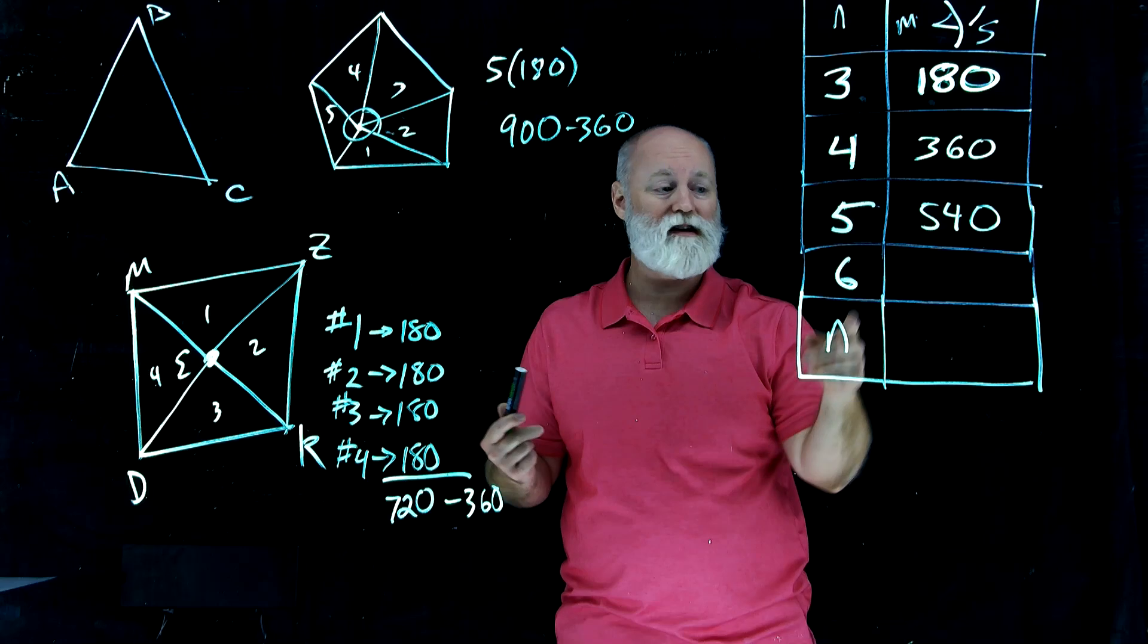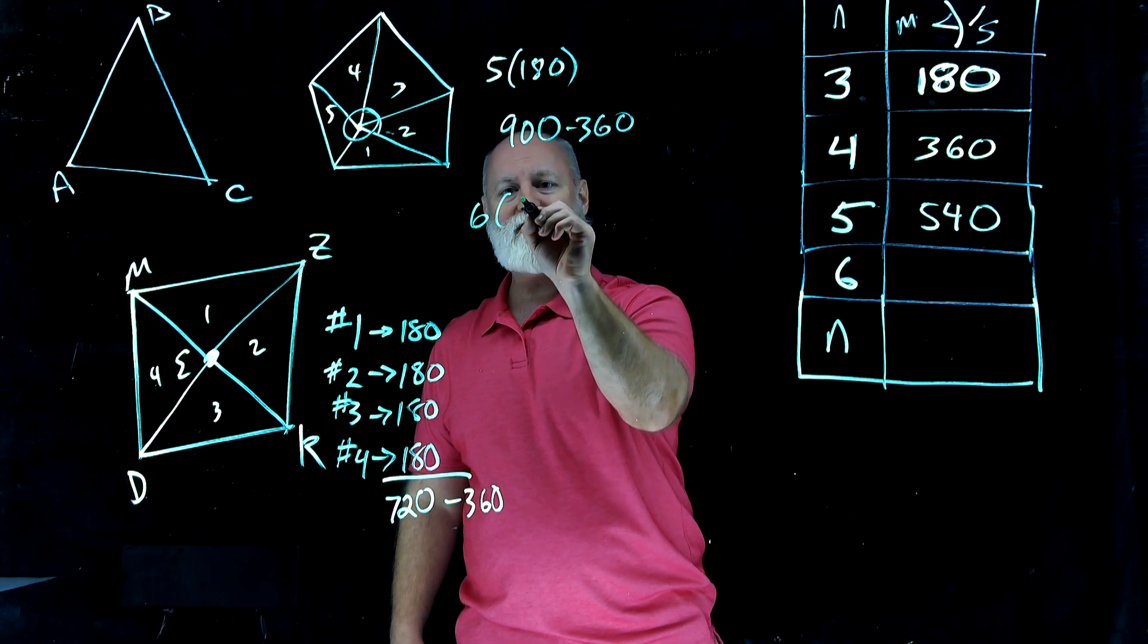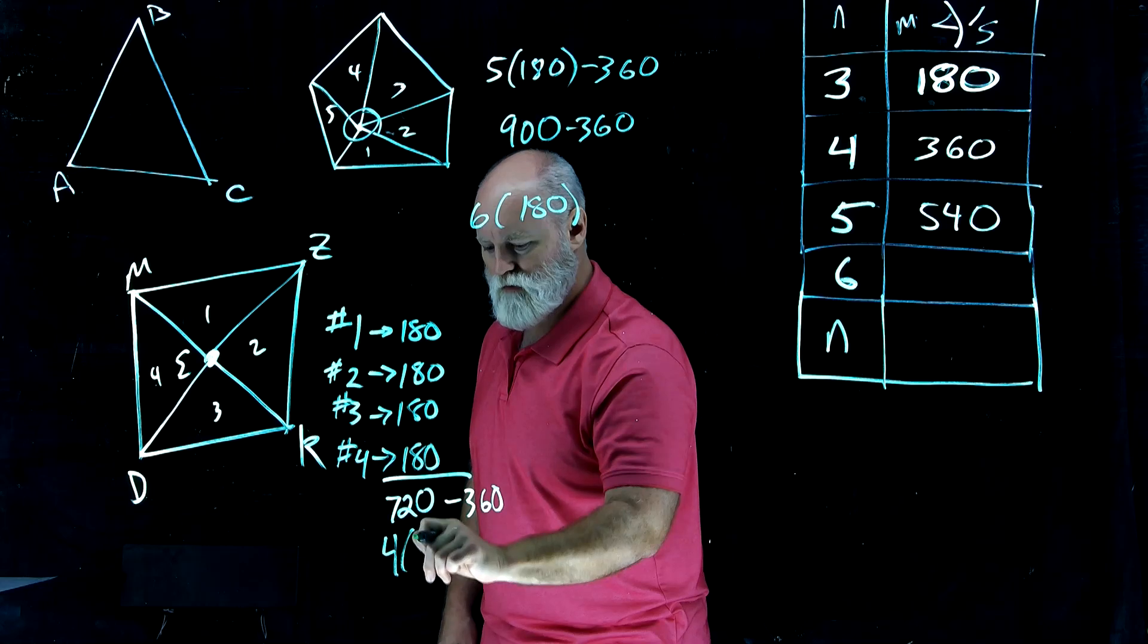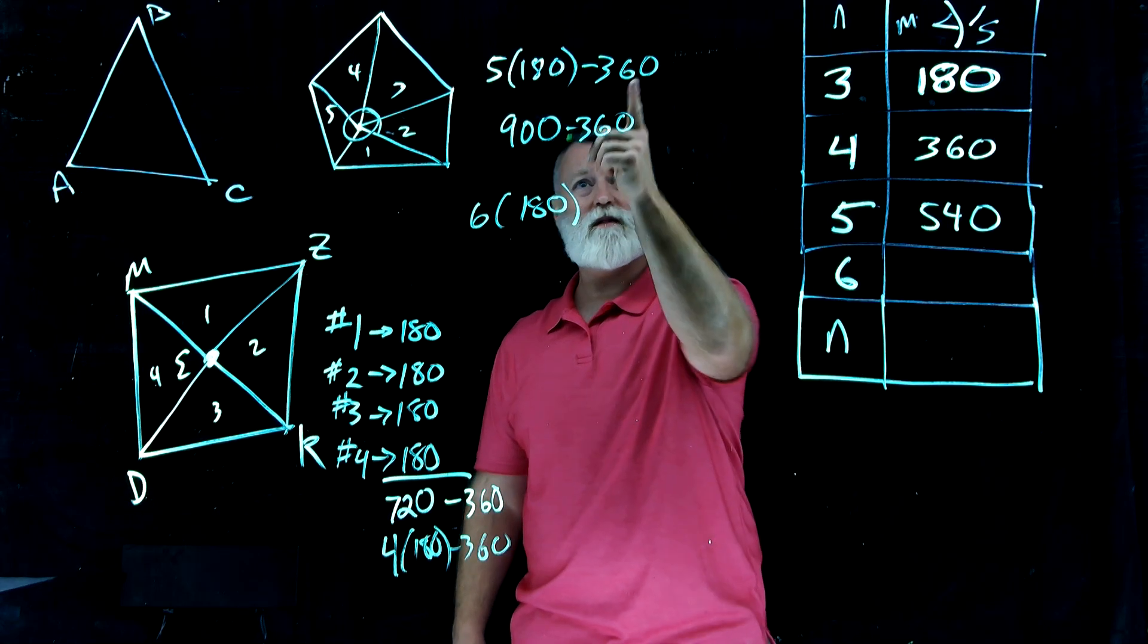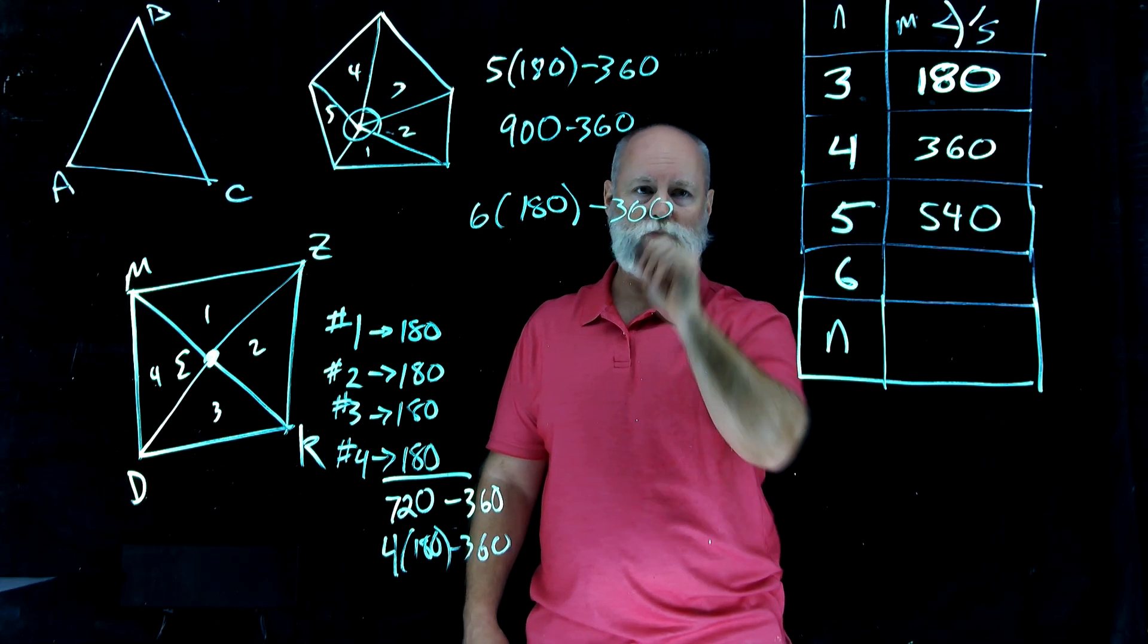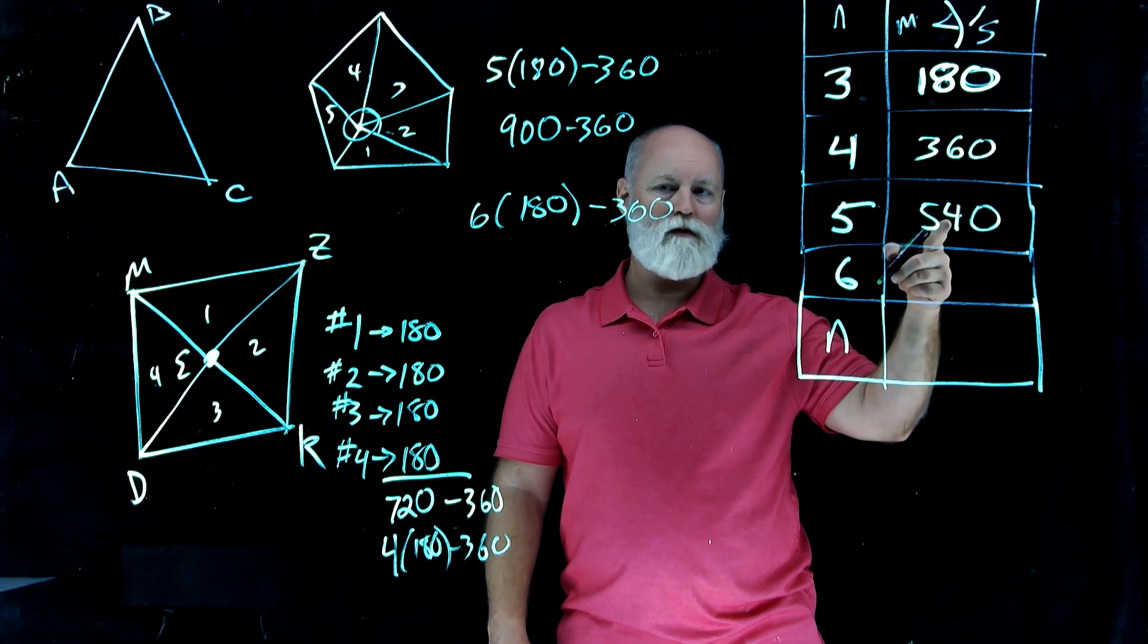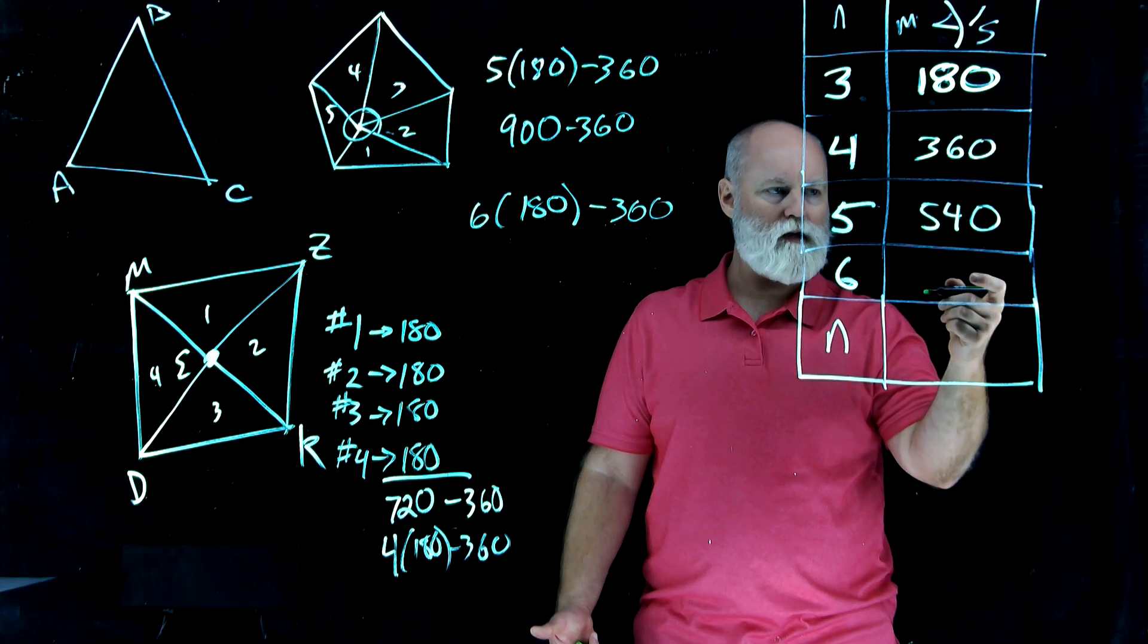What about if we had a hexagon? Well, that'd be 6 times 180, and each time we subtract off 360. Here, this was 4 times 180 minus 360, and it was 5 times 180 minus 360. Now it's 6 times 180 minus 360, again, because you've got to subtract off that central collection of angles there. And in that case, it's just going to be, well, notice again, it's actually the same thing happening over here. I'm just going to add 180 again.